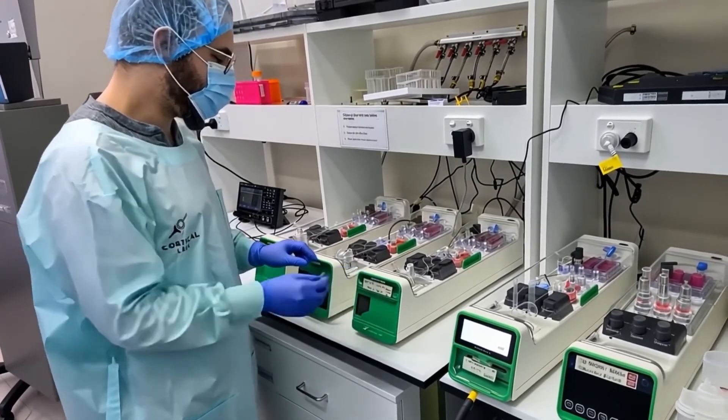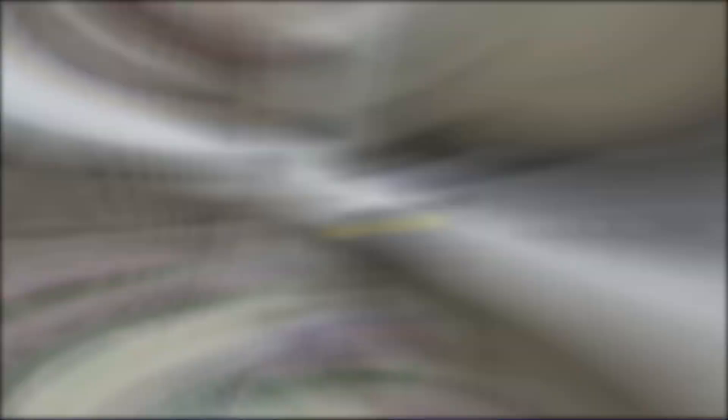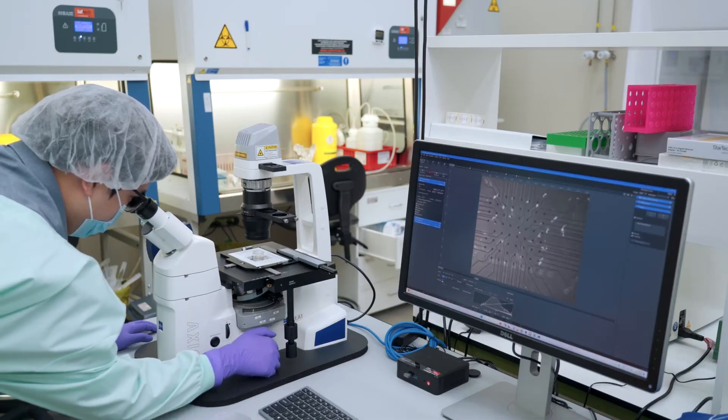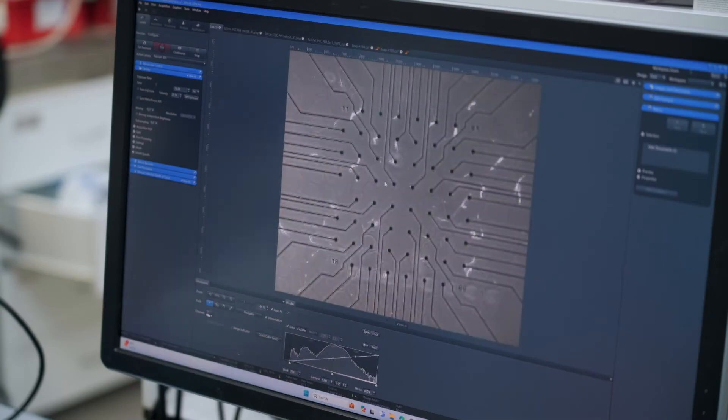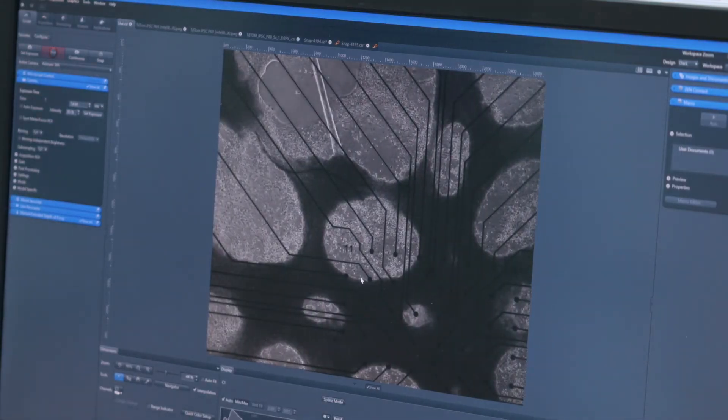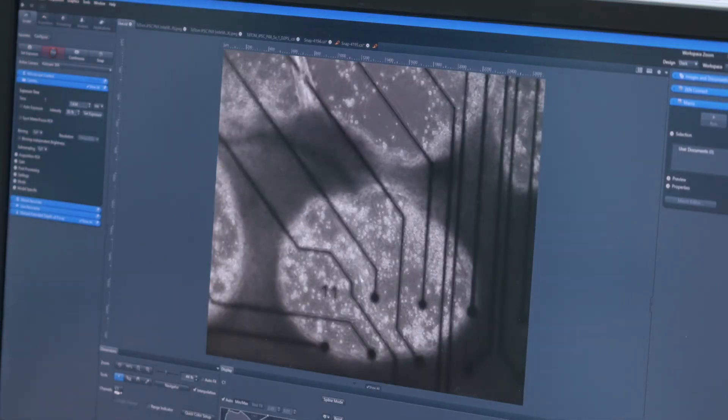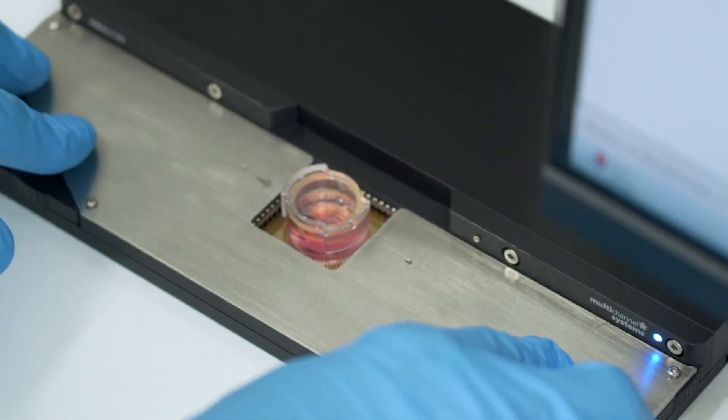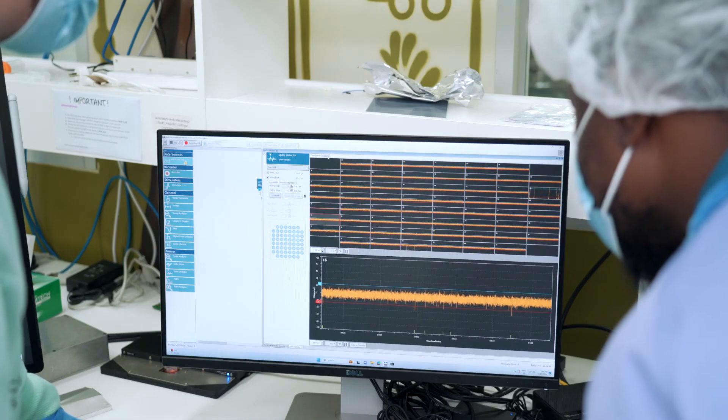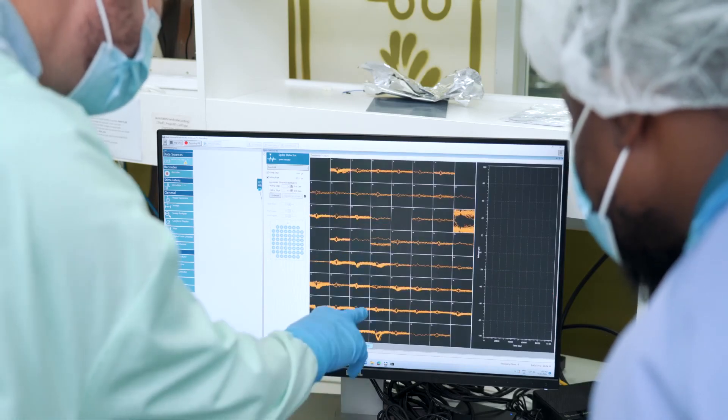In their dishbrain experiments, they made an amazing discovery. Neurons crave predictability. When they find connections that create stable, energy-efficient outcomes, they strengthen those pathways. But when their actions lead to random, chaotic signals, they learn to avoid them. As Kagan explained, that was only the beginning. And with the CL1, they are now taking things to a whole new level.